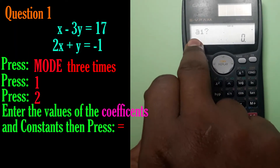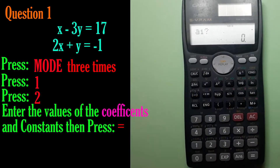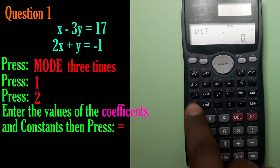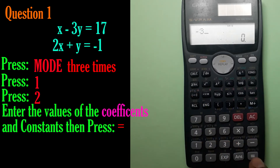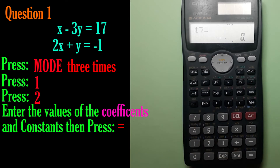Now it asks us to enter a1. a1 equals 1, then press equals. Then it asks b1 — b1 is negative 3. Press equals. Then c1 equals 17.